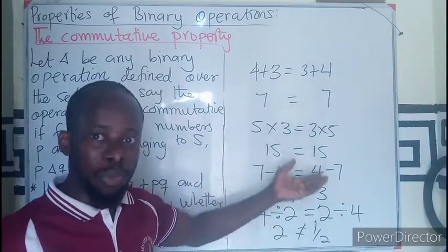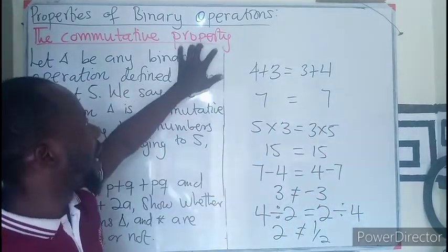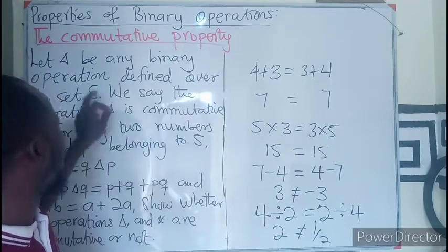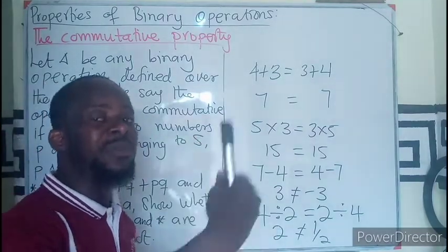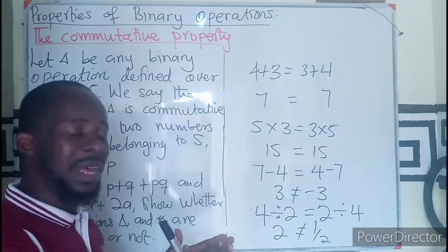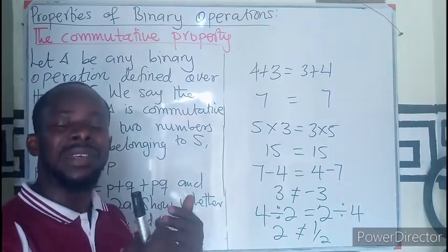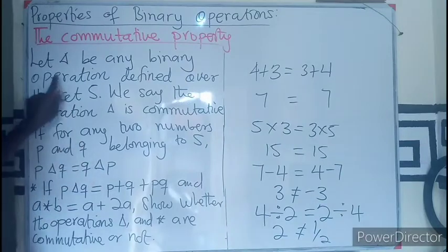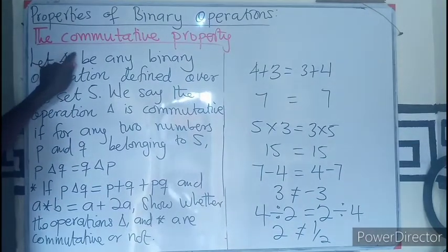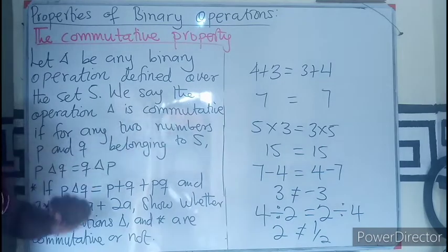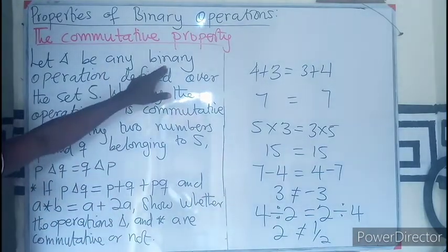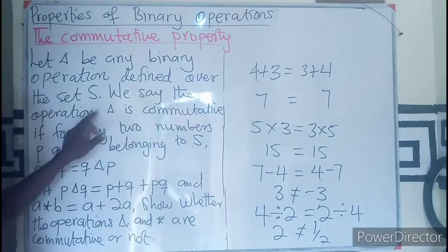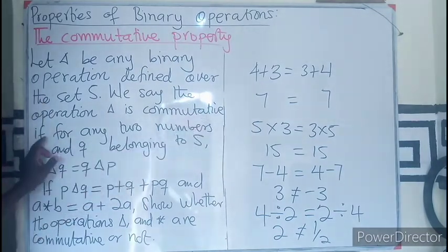So similarly, as we are saying that some operations are commutative, we want to also explain the commutative property in binary operations whereby we'll be using some operators whose identity will be defined. In this kind of questions, you can either get your operator to be commutative or not commutative. Let Δ be any binary operation defined over a set S.